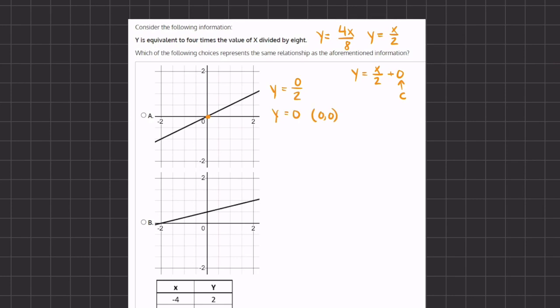A seems to be the right answer, and now let's move on to option B to see why it is incorrect. Another way to see that A is correct is because we have a slope of half. A slope of half means that for every time we move up 1, we have to move to the right 2, and that matches our slope.